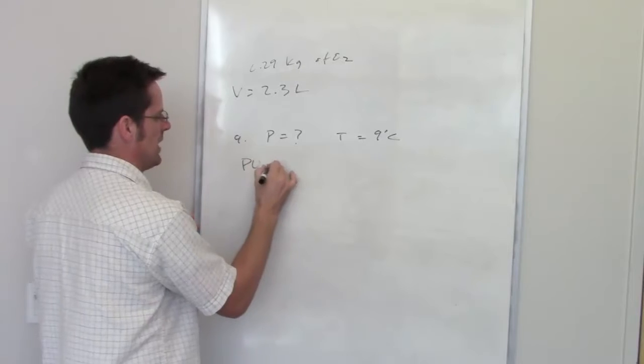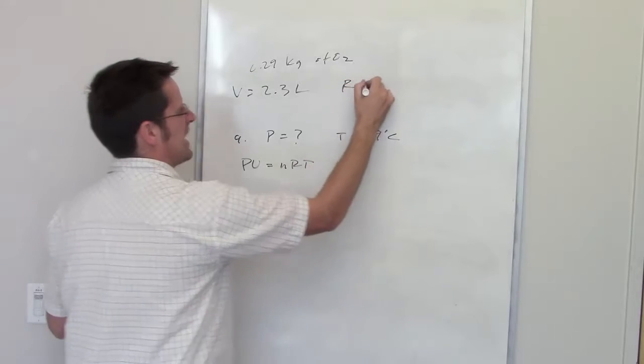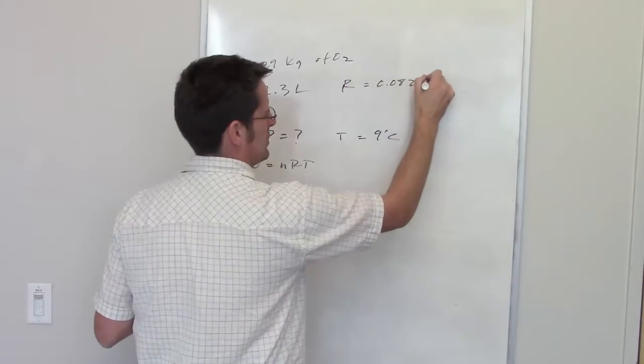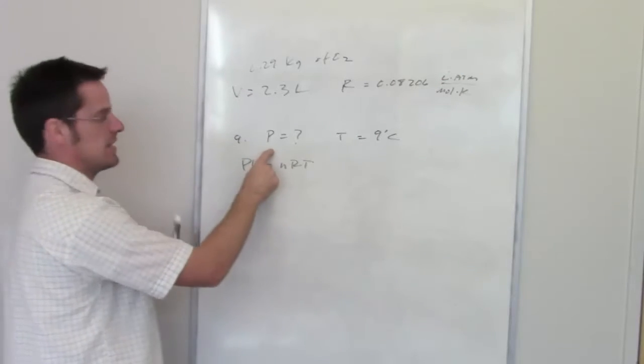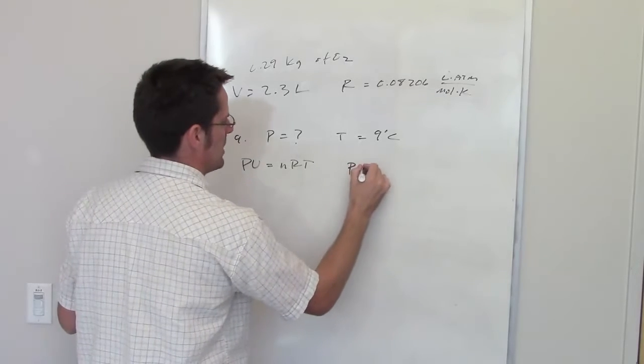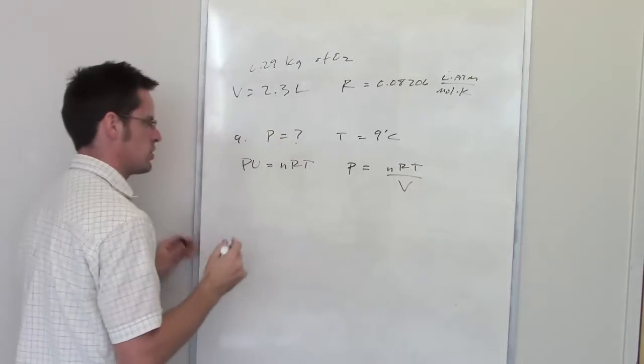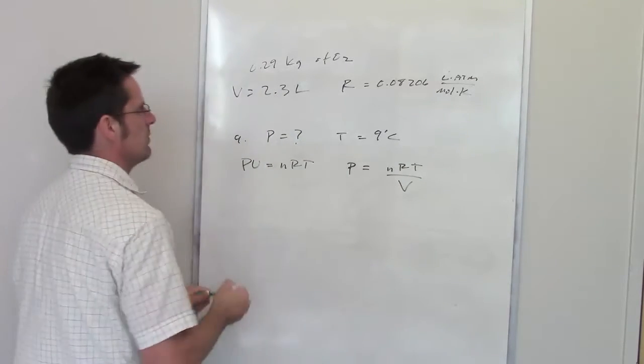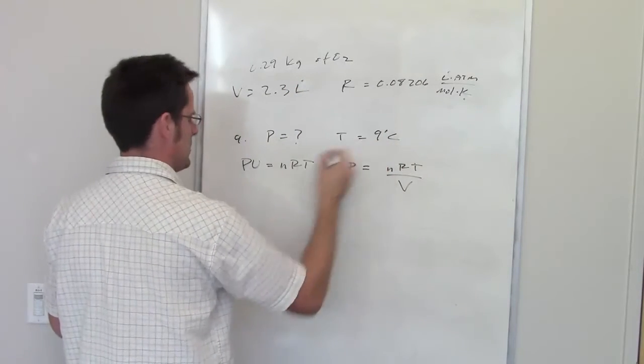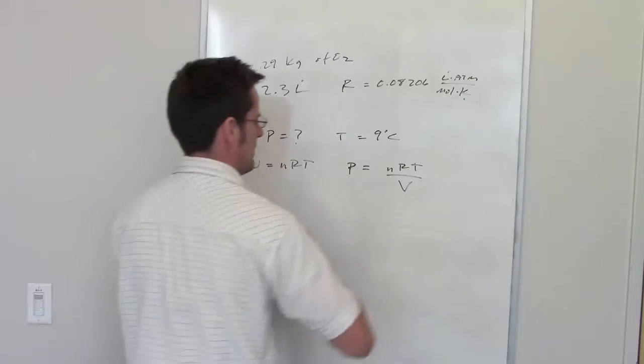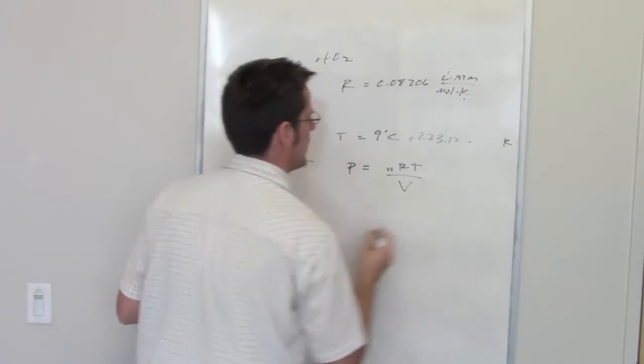We're once again going to use our ideal gas law equation, PV equals nRT. I of course know my ideal gas constant is 0.08206 liter atmospheres per mole Kelvin. The question is asking us for pressure, so I'm going to algebraically rearrange the equation to have pressure on one side and everything else on the other. Let's make sure that everything matches unit-wise. I have liters here, I have liters there. I've got Kelvins here. Ooh, I don't have Kelvins there. I've got degrees Celsius. So I'm going to have to add 273.15 to this to convert that into Kelvins. We'll come back to that in a minute.